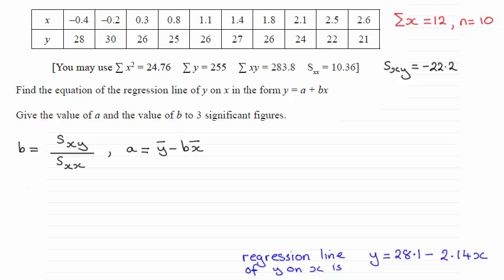So you should be familiar with how we go about calculating sxx. It's this formula here, sigma x squared minus sigma x all squared over n. So it's just a question of substituting our values into that.